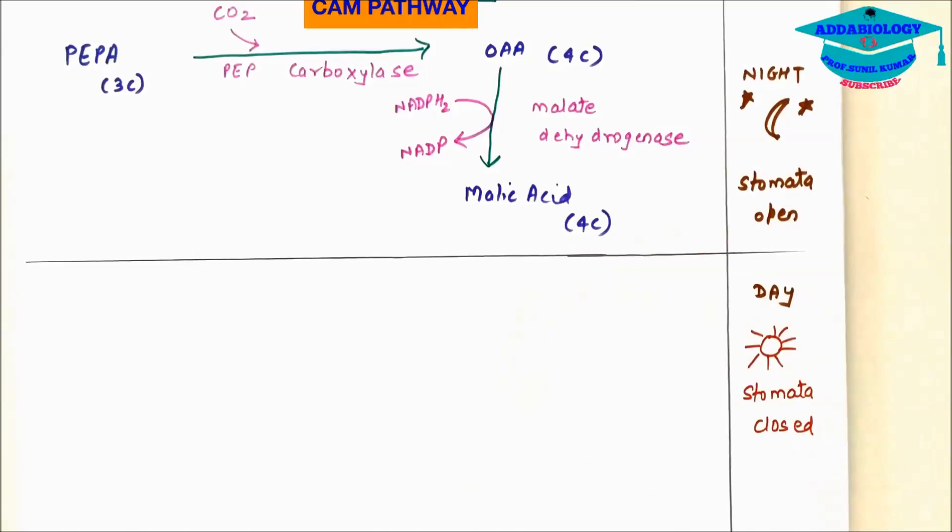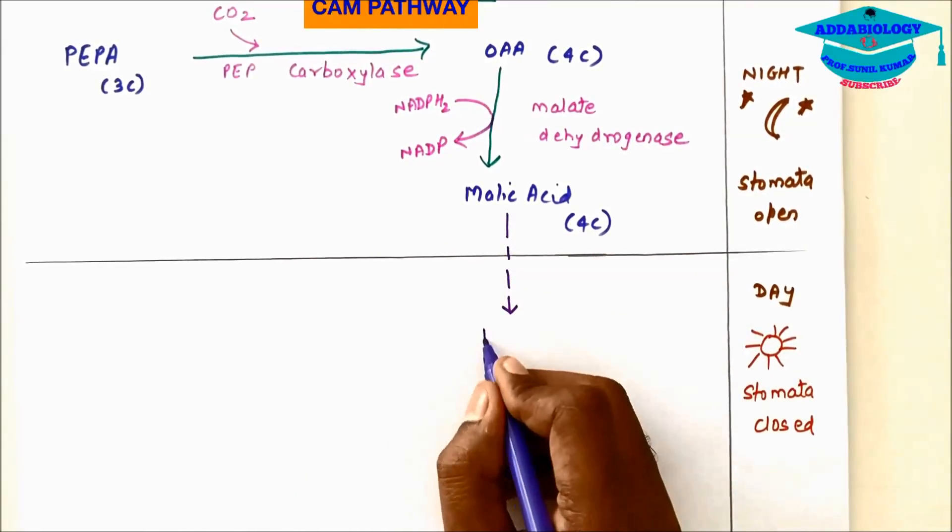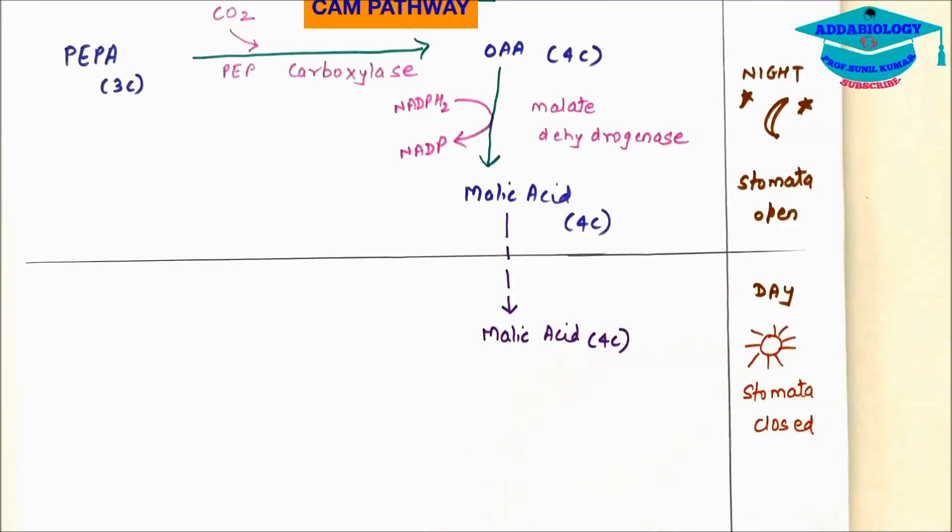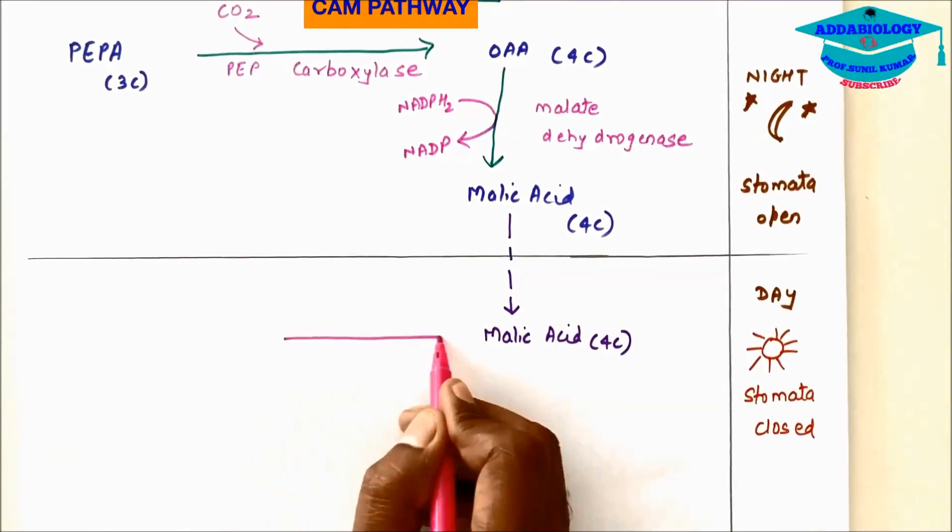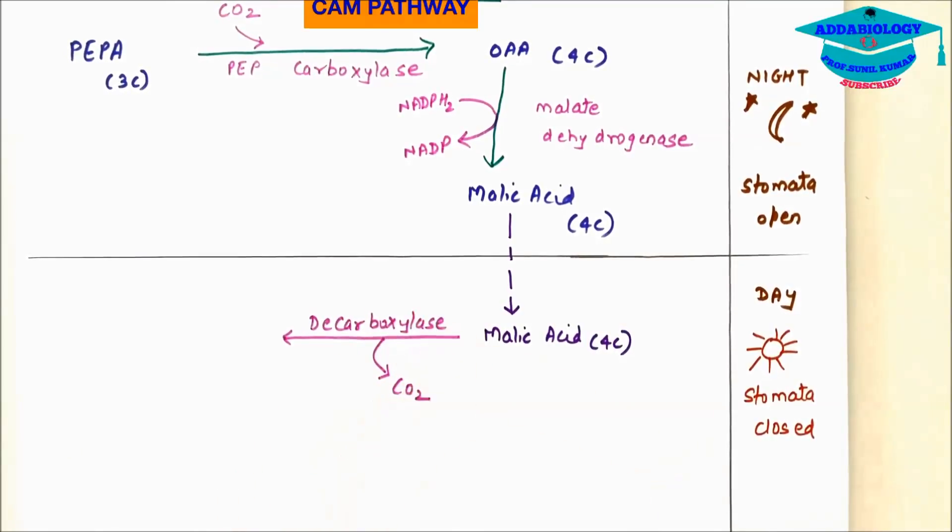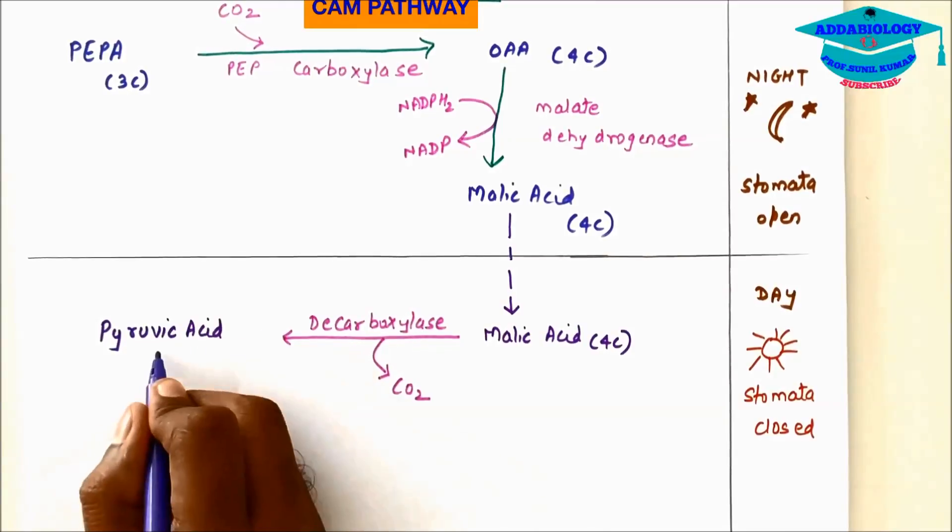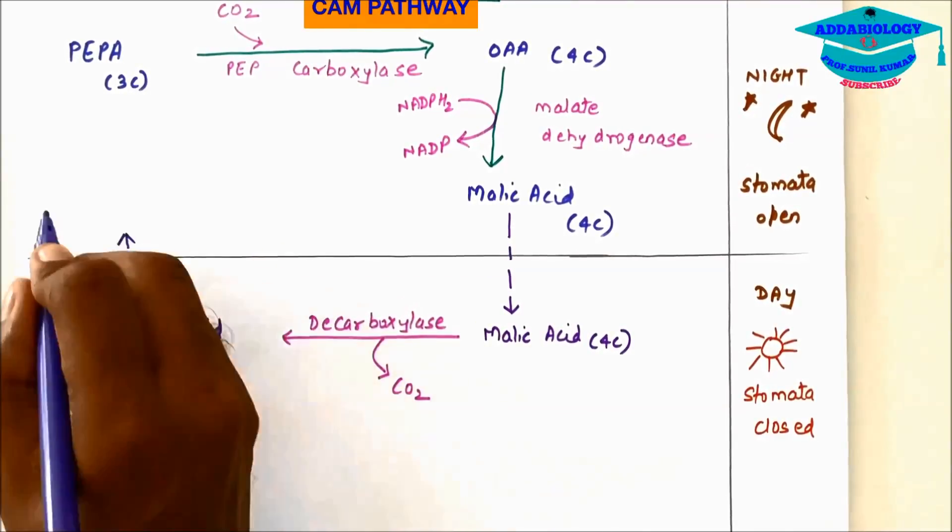Now this malic acid throughout the night remains as it is in the plant and during day time when stomata is closed, malic acid undergoes decarboxylation and forms pyruvic acid in presence of enzyme decarboxylase.